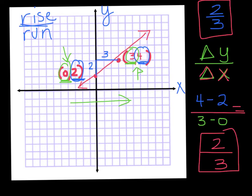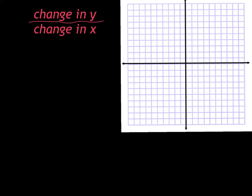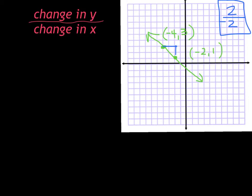Let me show you another example. We're going to find the slope of a line going through two points. I'll do it the old way quickly — I'm going up 2, so my rise is 2. And my run, I'm going back 2. I went left, so I put negative 2. So my slope is 2 over negative 2. I'll leave it like that for now.